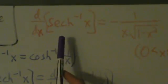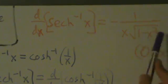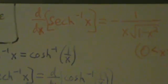And that's what we wanted. So that's the proof that the derivative of the inverse hyperbolic secant of x is negative 1 divided by x times the square root of 1 minus x squared.